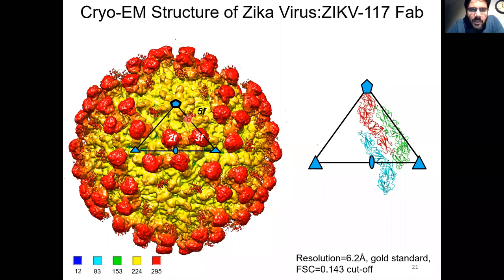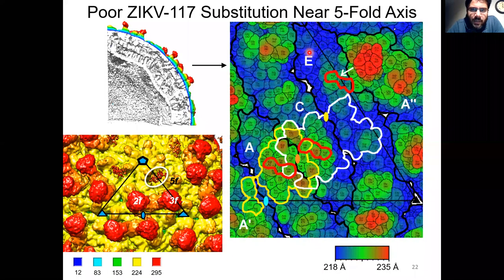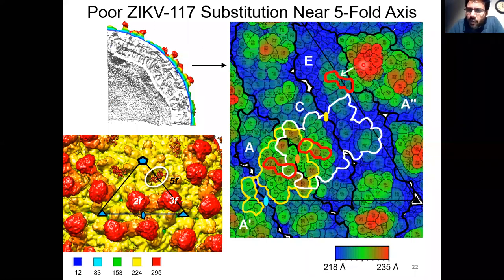To determine the factors responsible for poor binding at the 5F site, we constructed a radially colored road map of the Zika virus surface, where each amino acid in the E-protein is shown as a crudely drawn circle colored according to its distance from the viral center. Residues located closest to the center are colored dark blue, while residues at the highest elevation are colored red. Close inspection of our road map showed that near the expected 5F site, there was a cluster of E-protein residues located at a very high elevation — in effect acting as a mount.